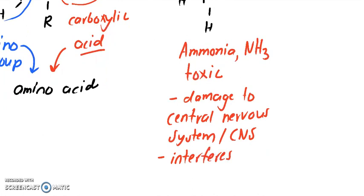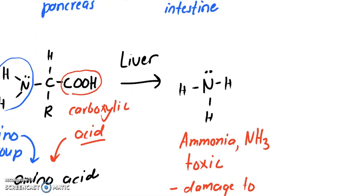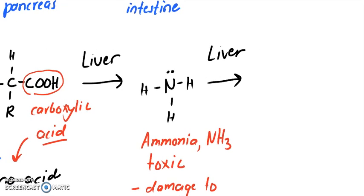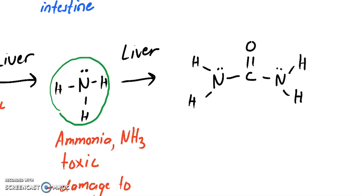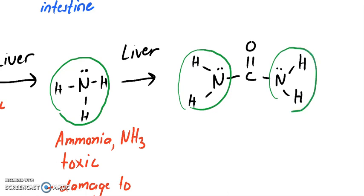Ammonia also interferes with the Krebs cycle, which is used to produce ATP. So we have to clear this ammonia out. Your liver will transform it again — notice the structural similarity: we have those two amino groups, one NH on each side of a carbon double bond. This molecule is called urea.